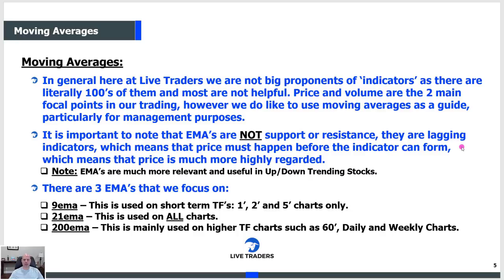If one indicator was so great, why are there 400 of them? Price comes first. By definition, moving averages lag price — the price has to happen for that moving average to form. If you use indicators, don't use more than one, maybe two. Anything more than that is just gluttonous. Most indicators are utterly worthless and useless. Go to the candlestick first, volume second. Indicators should be the last thing you look at. You don't need to use exponential MAs — regular moving averages work too, there's not a lot of difference.